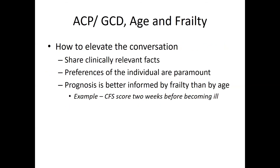There are excellent resources for this. AdvanceCarePlanning.ca is highly recommended. Alberta also has excellent resources on the AHS website if you search for advanced care planning. A few thoughts on elevating these conversations: they should be happening now, not in the context of acute illness. We should be sharing clinically relevant facts, not talking about age. Patient preferences are absolutely paramount and should trump all other considerations, and prognosis is better informed by frailty than by age.